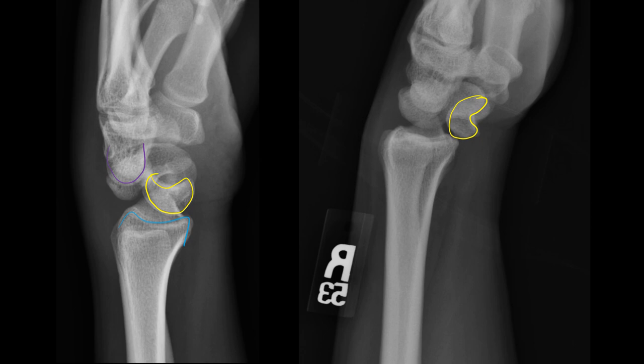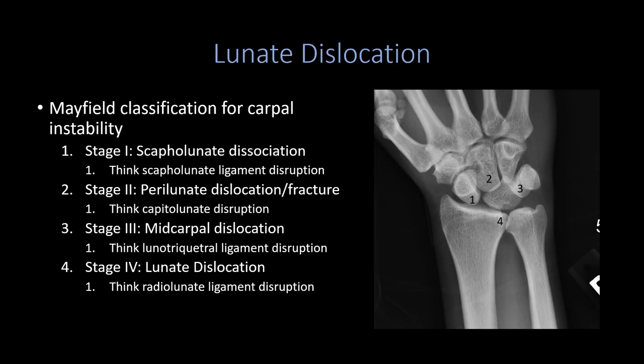We use the Mayfield classification for carpal instability, stages one through four. Stage one is scapholunate dissociation from scapholunate ligament disruption, which can be chronic. A mnemonic: place the lunate in the middle, go to the scaphoid for stage one, then clockwise through stages two, three, and four. In stage one, the scapholunate ligament is torn causing rotatory subluxation and angulation of the lunate.